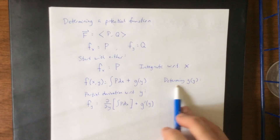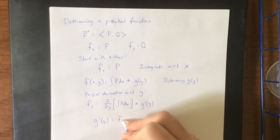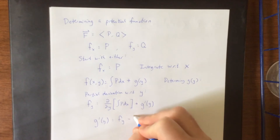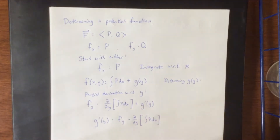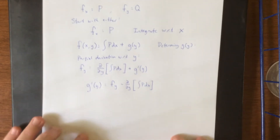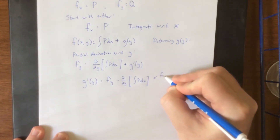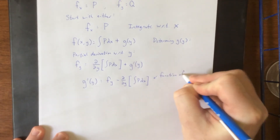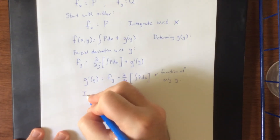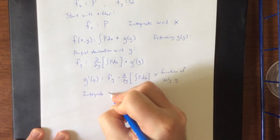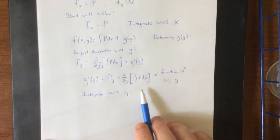We're interested in solving this for g, so let's isolate it on one side of the equation. We can do so by subtracting this term over. The right-hand side — the partial derivative of f with respect to y minus the partial derivative with respect to y of the iterated integral of p with respect to x — is a function of only y. One important thing to note: if this expression has any x's in it, then the field was not conservative to begin with.